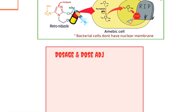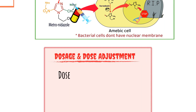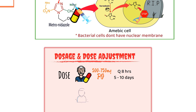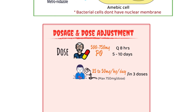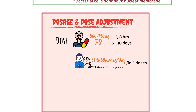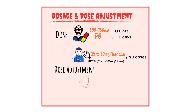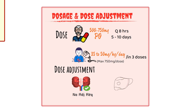Regarding dosage: in adults, for amoebiasis, the dose is generally 500 to 750 mg orally every 8 hours for 5 to 10 days. In children, the dose is 35 to 50 mg per kg per day divided into 3 doses, with a maximum dose of 750 mg per dose. Metronidazole may also be used intravenously for severe infections. No dose adjustment is needed for renal failure; however, the dose must be modified in hepatic failure according to the Child-Pugh score.